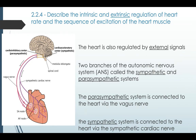This is where extrinsic regulation of heart rate comes in. The heart is also regulated by external signals coming from two branches of the autonomic nervous system: the sympathetic and the parasympathetic systems. The parasympathetic system is connected to the heart via the vagus nerve, and the sympathetic system is connected via the sympathetic cardiac nerve, as seen in the diagram.